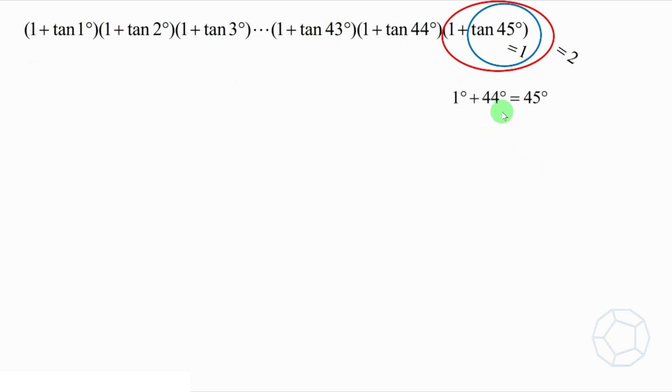Next, if we look at the pairs 1 degrees and 44 degrees, 2 degrees and 43 degrees, etc., the sum is always 45 degrees. Let's consider the first pair, 1 degrees plus 44 degrees equals to 45 degrees, and take tangent on both sides.